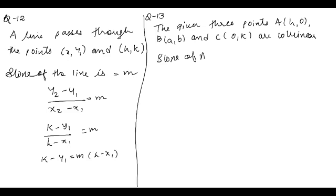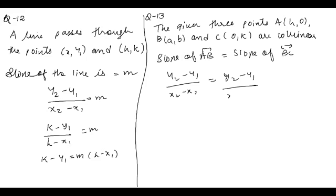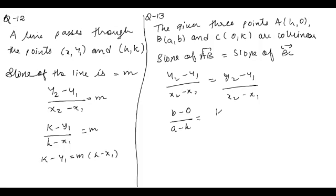So the slope of line AB is equal to the slope of line BC. Using (y2 - y1)/(x2 - x1) for each pair: for segment BC it will be (k - b) upon (0 - a), and for segment AB it will be (b - 0) upon (a - h).